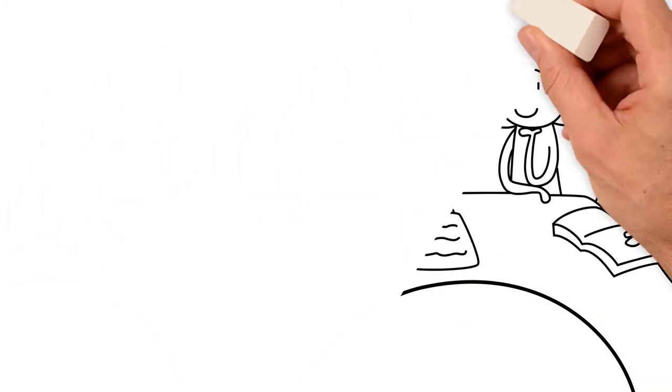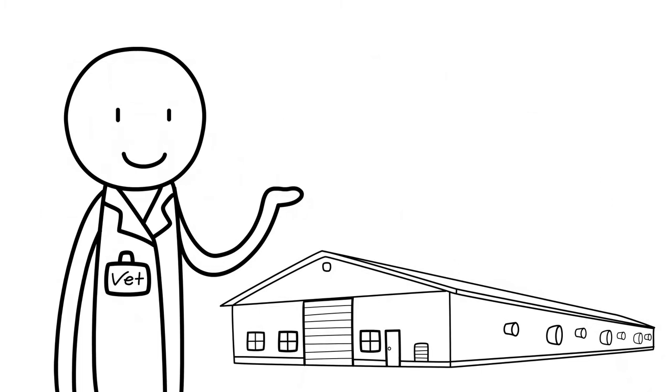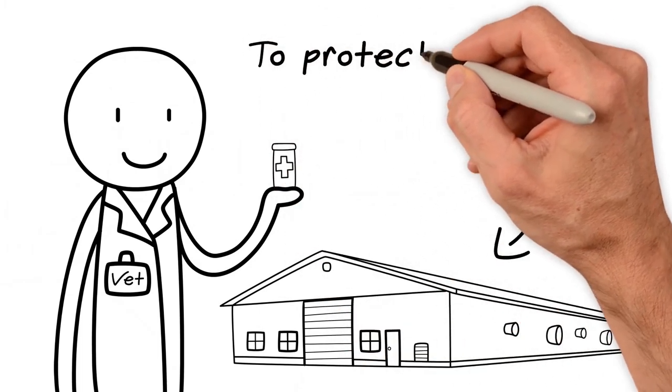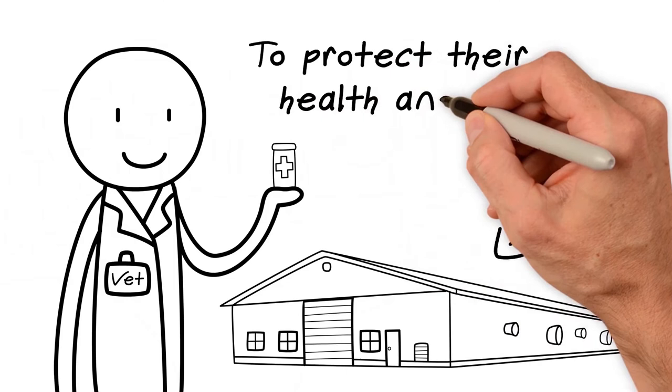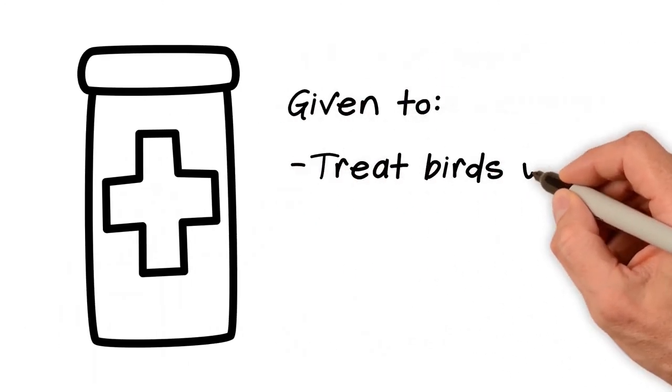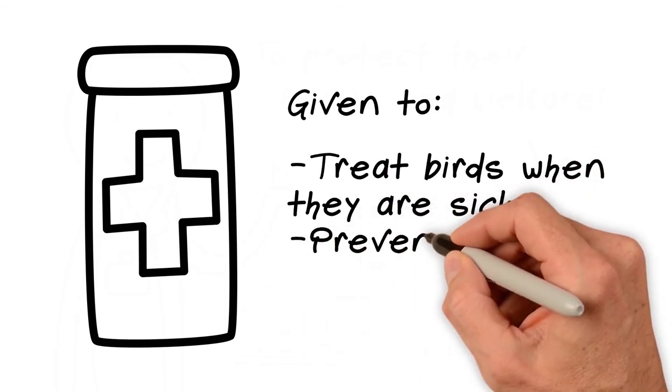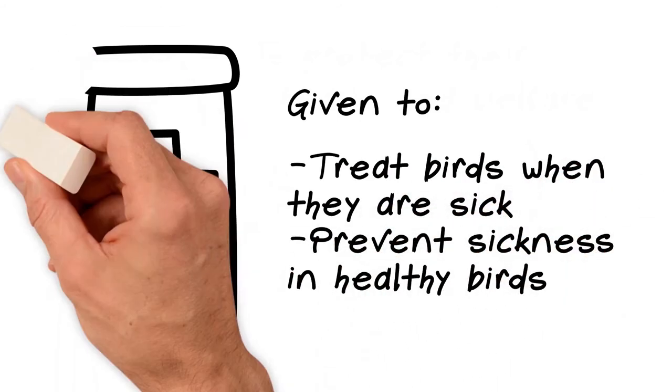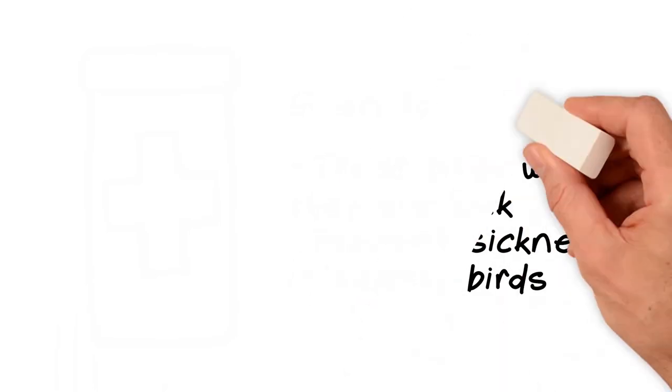So, can farmers use antibiotics? Yes. Farmers can use antibiotics in chicken farming to protect the health and welfare of the birds. Antibiotics are given to treat the birds when they are sick and to prevent them from getting sick in the first place. But all antibiotics aren't created equal.